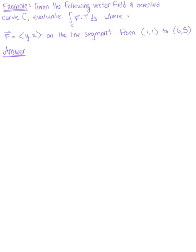Given the following vector field in oriented curve C, evaluate the vector line integral where the vector field is defined by the components y, x on a line segment from (1,1) to (6,5).